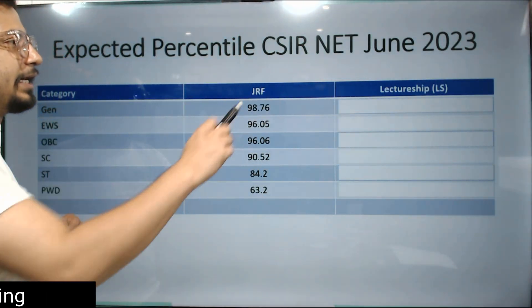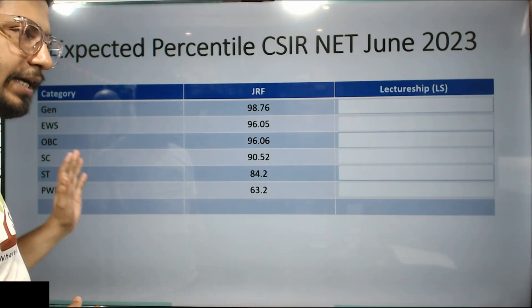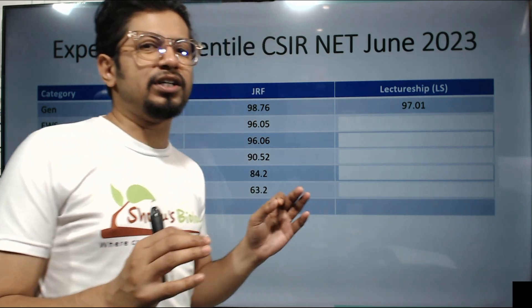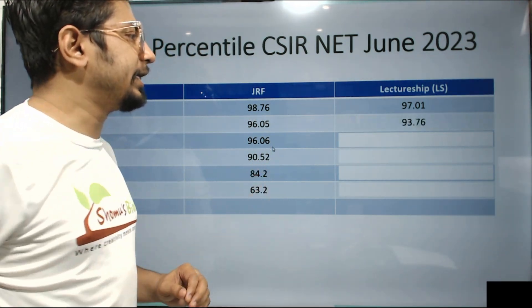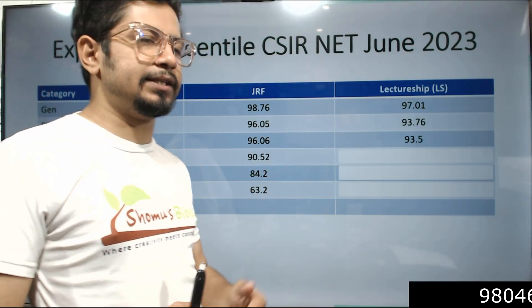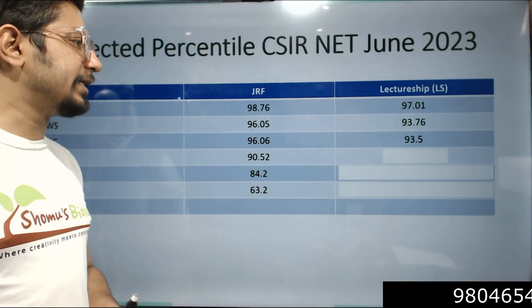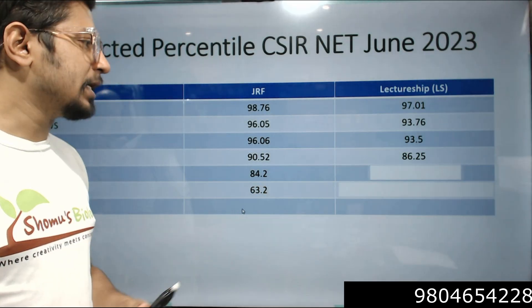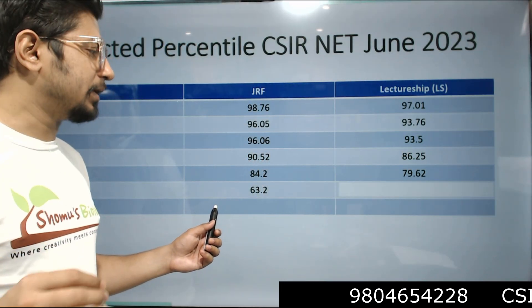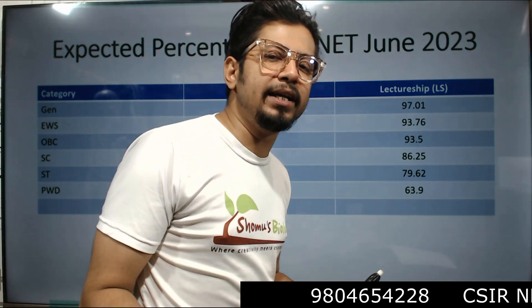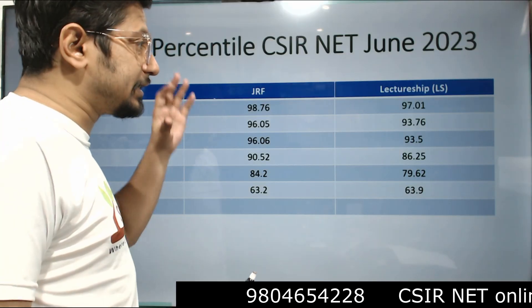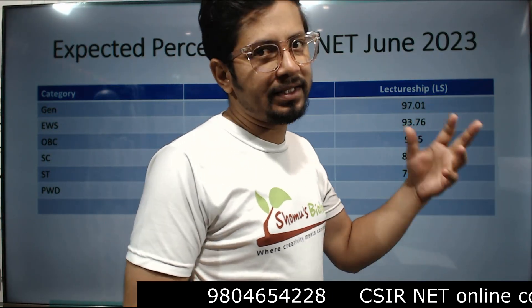Next is the Lectureship category — again the same groups: General, EWS, OBC, SC, ST, and PWD. For General, 97.01 percentile. For EWS, 93.76 percentile. For OBC, 93.5 percentile. For SC, 86.25 percentile. For ST, 79.62 percentile. And for PWD, 63.9 percentile. Remember, these are not the official scores released by CSIR — these are expected percentile cutoffs for different categories.